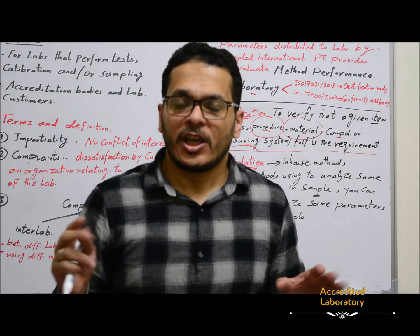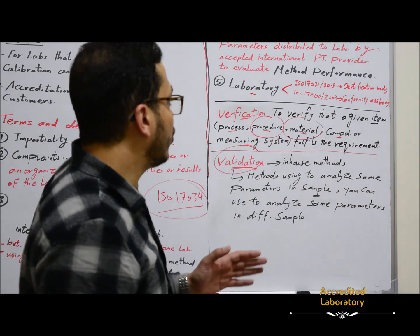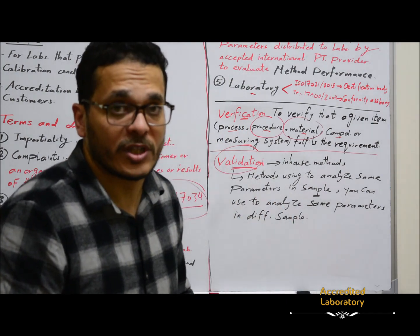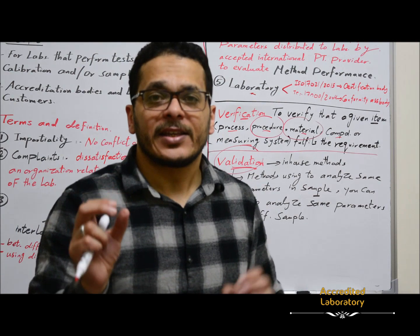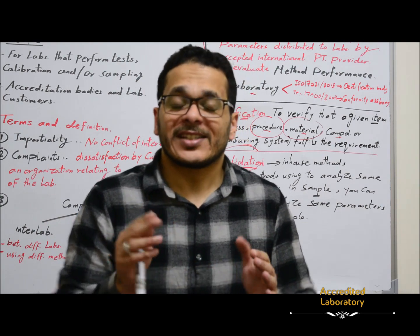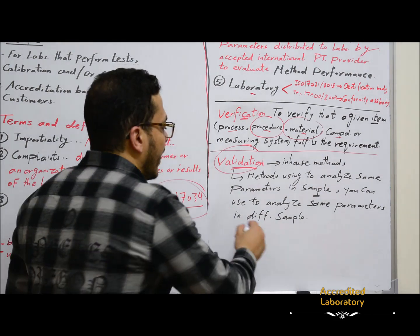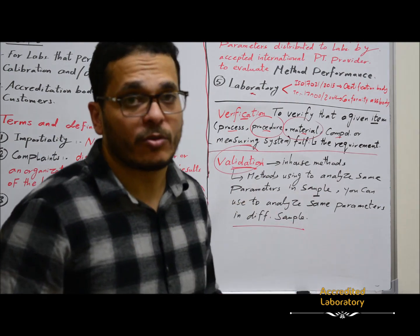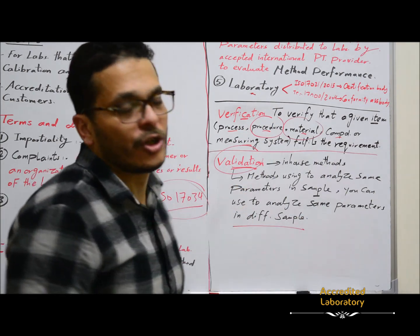Validation is for in-house methods. If you have already developed a new in-house method and want to validate it, you evaluate the performance parameters for that method. Or if a method was already used to analyze certain parameters in one sample and you want to use the same method to analyze the same parameters but in a different sample matrix, you must first validate the method and evaluate its performance parameters. This will be explained in detail in the method validation course.